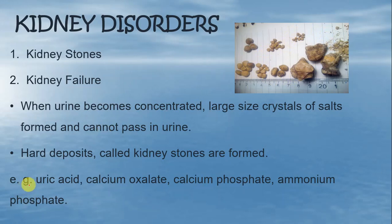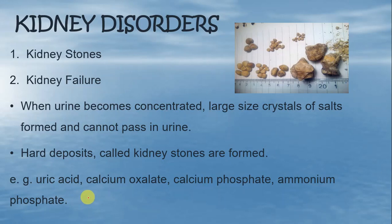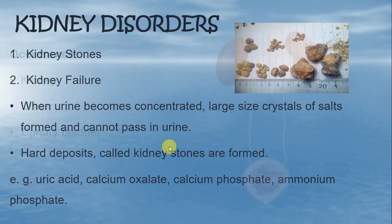अब वो कौन-कौन से salts हैं जो kidney के अंदर stone form कर सकते हैं? Uric acid, calcium oxalate, calcium phosphate, ammonium phosphate — यह वो सारे salts हैं जो kidney के अंदर crystals form करते हैं, then उन्हीं crystals से finally stones बन जाते हैं.